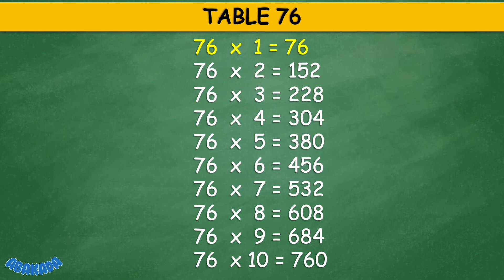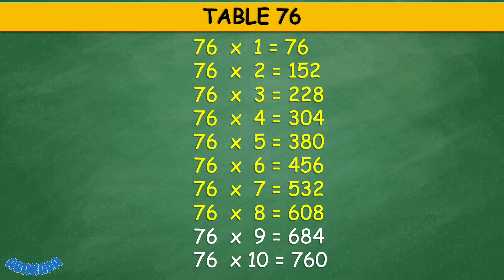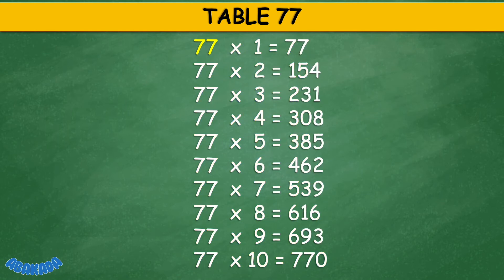Table 76: 76 times 1 equals 76, 76 times 2 equals 76, 76 times 4 equals 304, 76 times 5 equals 380, 76 times 6 equals 456, 76 times 7 equals 532, 76 times 10 equals 760.